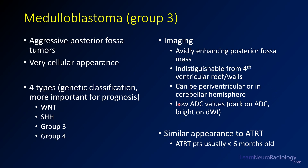They can be periventricular or in the cerebellar hemispheres, but they're often going to have low ADC values — dark on ADC, bright on diffusion. Their appearance is very similar to ATRT, but ATRTs are usually in patients less than six months old. So if you have a patient that's two years old or older, think medulloblastoma; if the patient is younger, think ATRT.